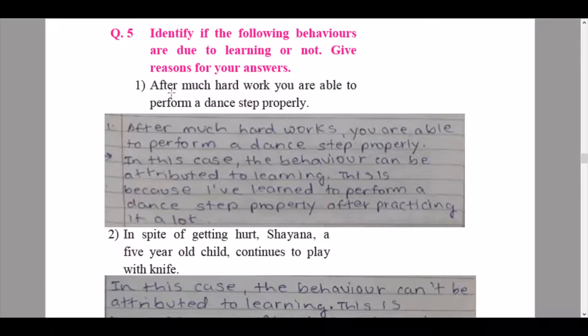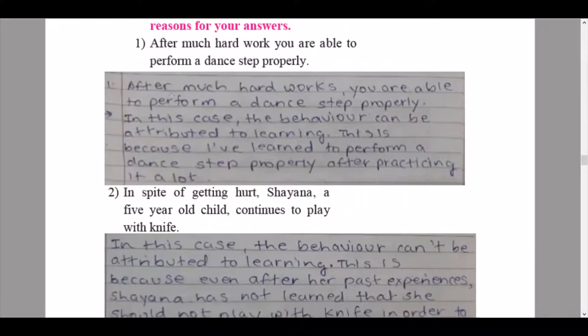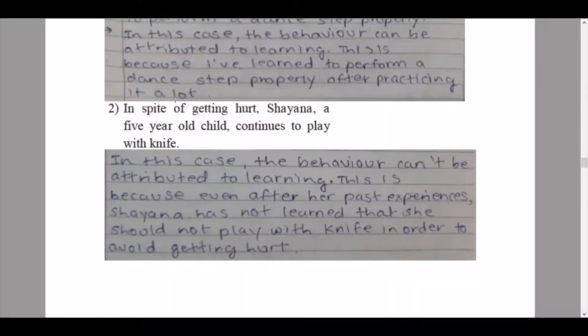This is because I have learned to perform a dance step properly after practicing it a lot. Then we continue to our second behavior: in spite of getting hurt, Shana, a five-year-old child, continues to play with knife. In this case the behavior can't be attributed to learning. This is because even after her past experiences, Shana has not learned that she should not play with knife in order to avoid getting hurt.